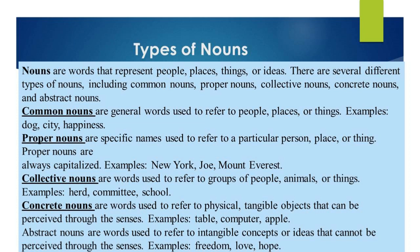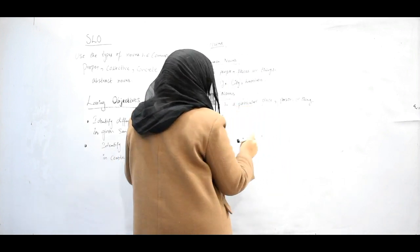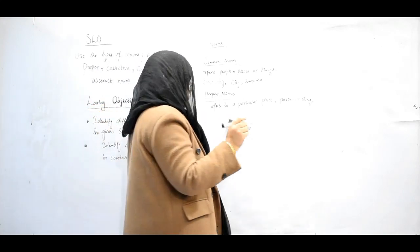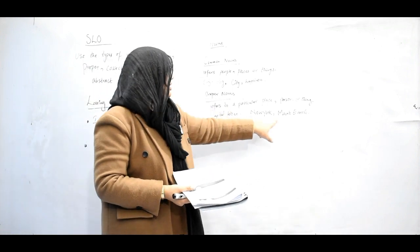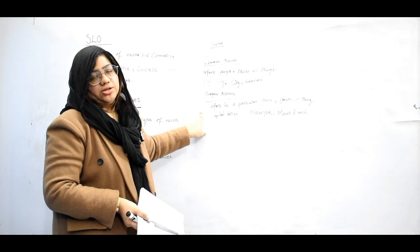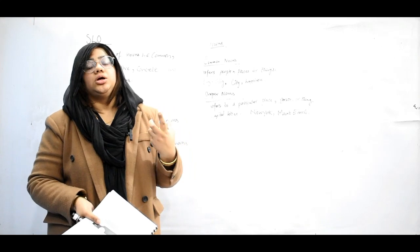Proper nouns refer to a particular place, thing, or person. Please keep in mind that proper nouns are always written with a capital letter. For example, New York and Mount Everest. I used capital letters because proper nouns should be capitalized, and they refer to a specific place, person, or object.